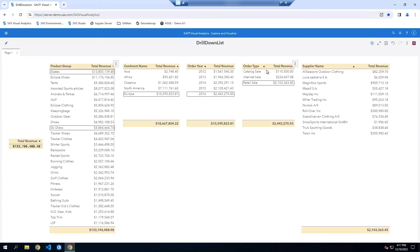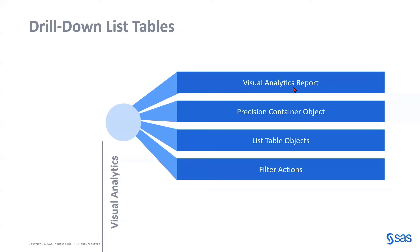I can make single selections or multiple selections simply by holding control and selecting multiple items. If I want to deselect, control and click to deselect. So how did I create this report? I created a Visual Analytics report, started with a precision container object to help control the position and layout of each individual list table, then added a series of list table objects with filter actions between the tables. Let's reconstruct drill down list tables from scratch.